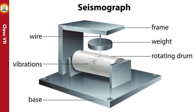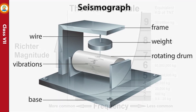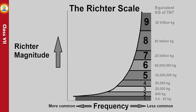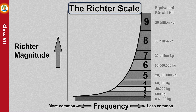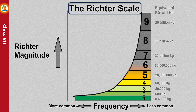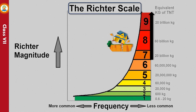Earthquake tremors are recorded by an instrument called a seismograph. The magnitude or intensity of an earthquake is measured by the Richter scale; the numbers in this scale range from 0 to 9. Earthquakes of magnitude 7 and above are very destructive and cause heavy damage to life and property.